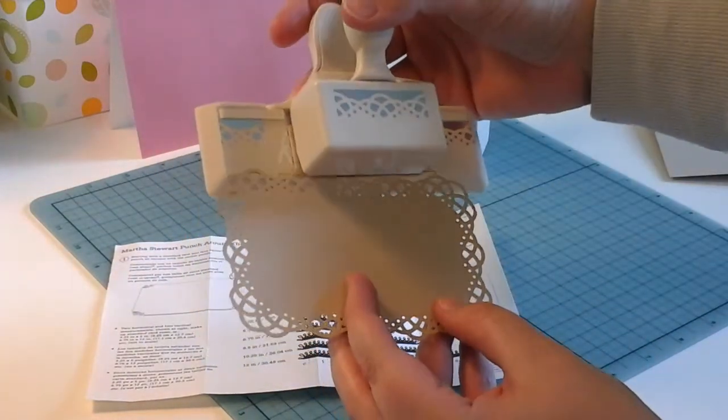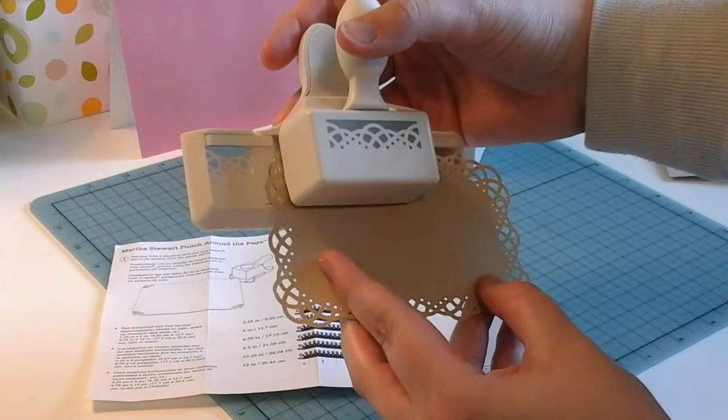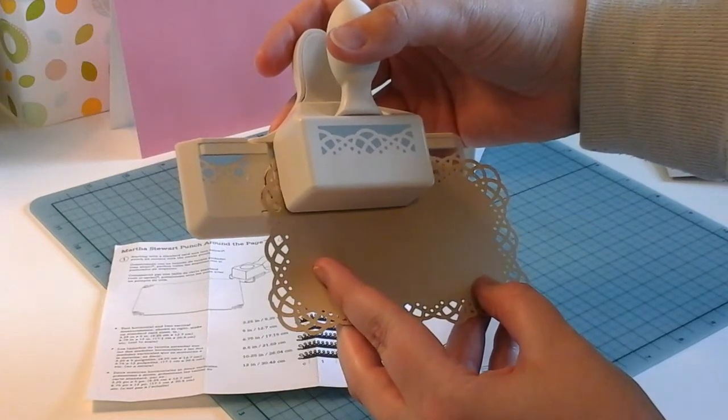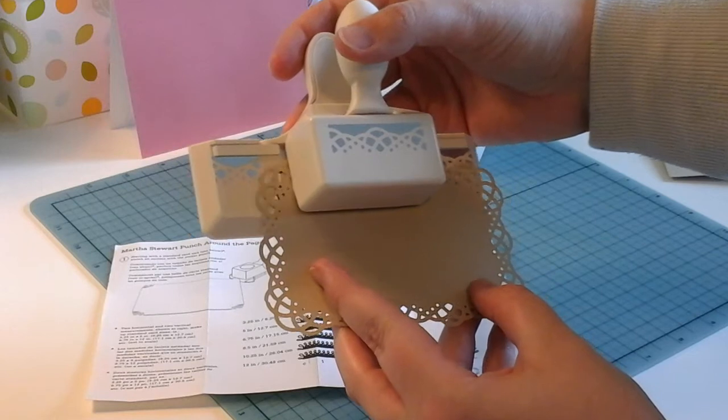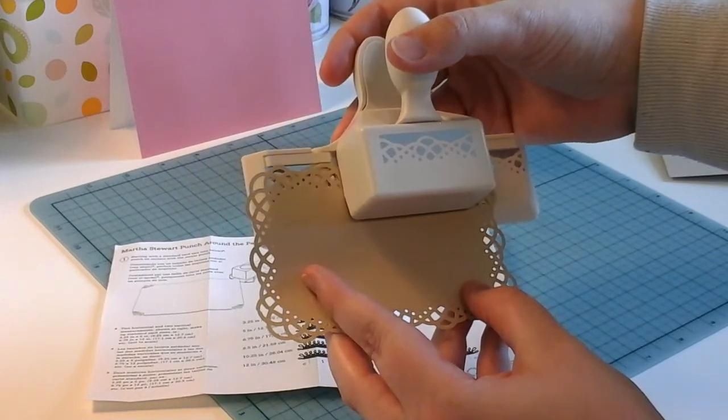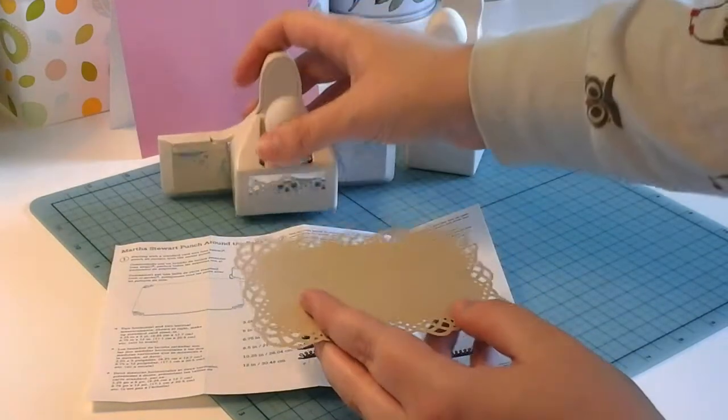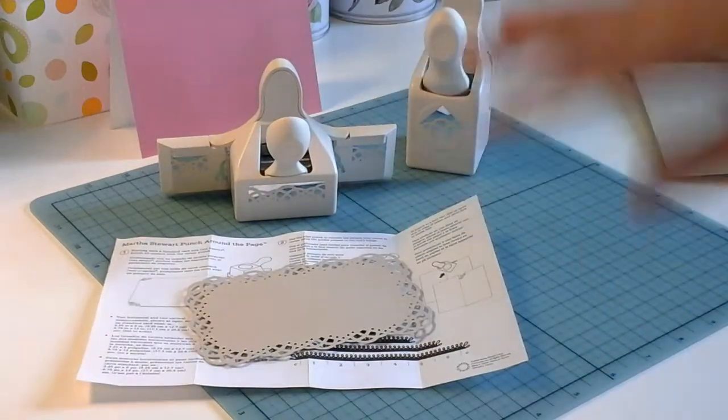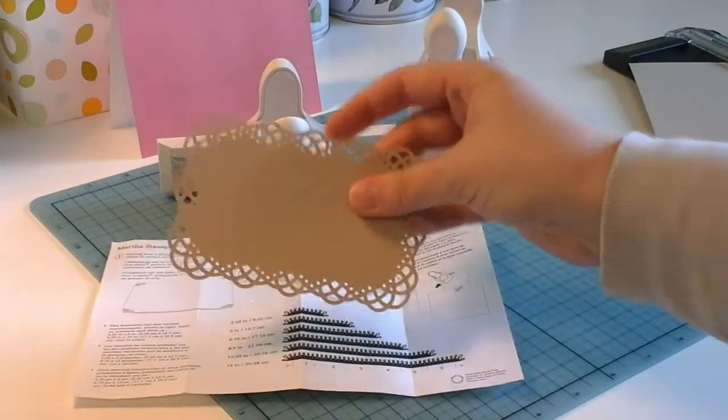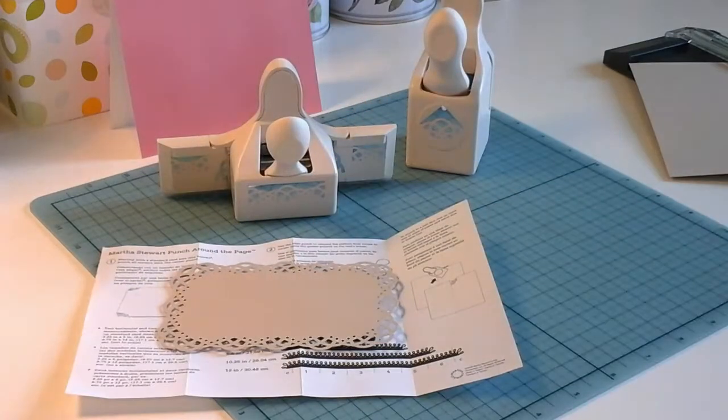When you put it in the punch, you have to line up the corner in here perfectly and then punch. And then when you're doing the next section, you have to line it up along here and punch. My hands were all in the way on camera, so I did it off camera. So there's that final lace piece.